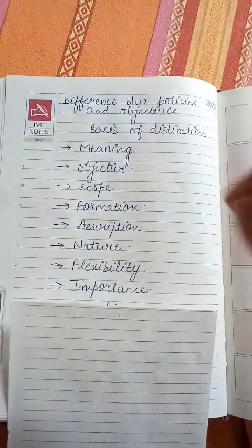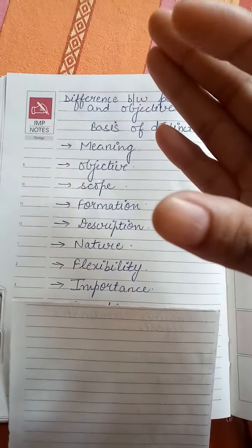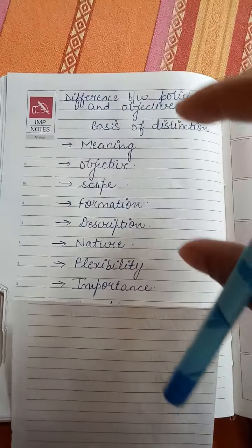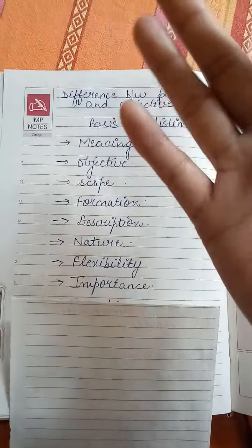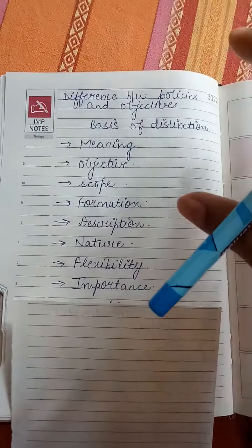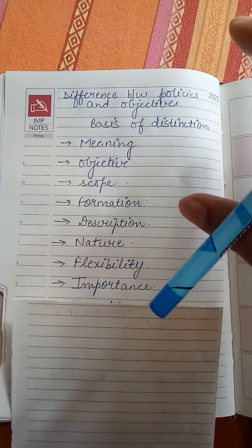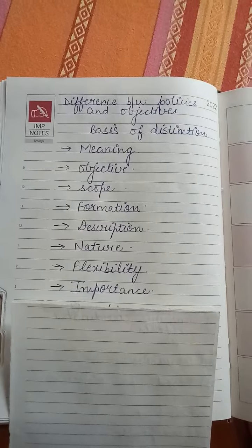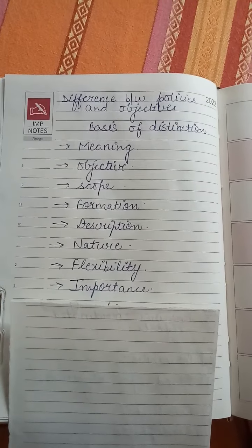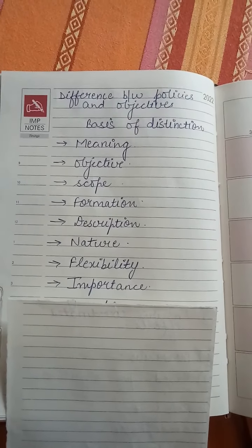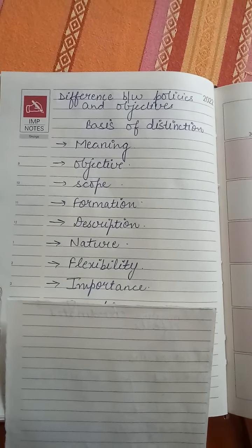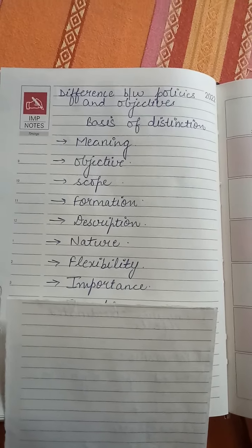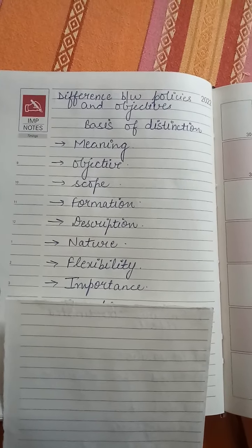Next, we have flexibility. Policies are flexible — you can make changes according to your choice. But objectives are rigid. They are strictly made, and you cannot easily change them according to your choice.